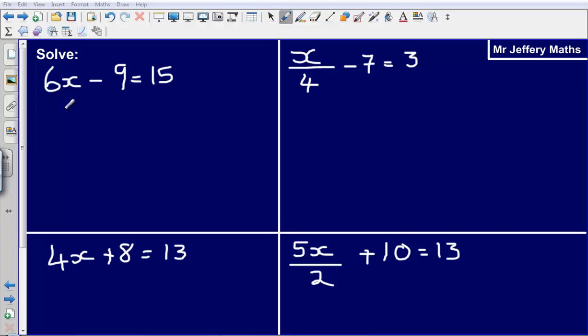So, what we're looking to do is undo the things that are being done to the number that we don't know. So here I've got 6x minus 9 is equal to 15. We're looking to get to a situation at the end of solving this where we've got x is equal to just the number. We want to find out what this unknown number is.